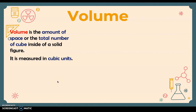The formula for the volume of a prism is: area of the base times the height, or length times width times height. If the prism is a square prism, you may use the formula: area of the base equals s squared, times the height.